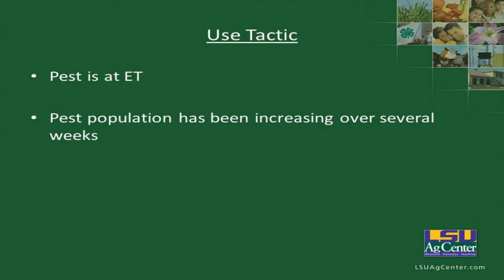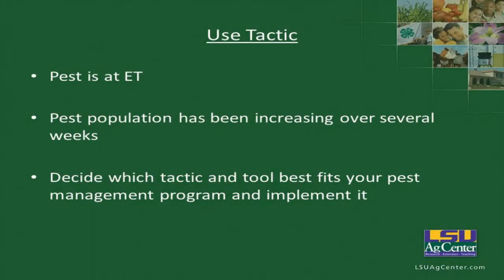Also, when you need to use a control tactic is when pest populations have been increasing. You don't want to use a control tactic if you've just barely reached threshold and populations haven't been increasing quickly, because the economic threshold is based on the fact that pest populations are going to be increasing. You need to decide which tactic best fits your pest management program and implement it — for most of us, that's going to be insecticides.